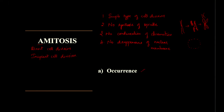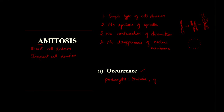Coming to the occurrence of amitosis — what cells will undergo amitosis? Prokaryotes like bacteria, cyanobacteria (blue-green algae), and also yeast and some eukaryotes will undergo amitosis. Eukaryotes like amoeba, cartilage cells, and fetal membrane cells also undergo amitosis.